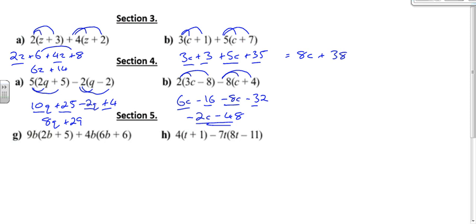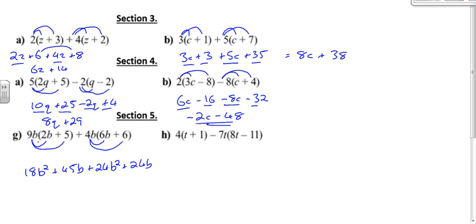Then we do it again, but this time it's one step harder. So 9b times 2b: 9 times 2 is going to be 18, but it's b times b, so it's going to be 18b squared. And 9b times 5: 9 times 5 is going to be 45b. Next, 4b times 6b is going to be 24b squared. 4b times 6 is going to be plus 24b. Even though we've got b squareds and b's, we can only simplify the b squareds together. So 18b squared plus 24b squared is 42b squared, and 45b plus 24b is 69b.